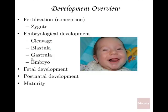Then it goes through gastrulation — a folding in — and you get defined layers within that ball of cells: outer layers, middle layers, and inner layers. It's called an embryo until about week nine, and then from that point on it's a fetus through the second and third trimester. Eventually birth happens, and then you have postnatal development: toddler, child, adolescence, adulthood, and eventually maturity and death.